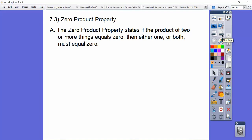The zero product property states that if the product of two or more things equals zero, then either one of them or both of them must equal zero, or all three of them or all four of them must equal zero. So if we have something times something times something equals zero, then remember anything times zero equals zero. So either this something equals zero and or this one equals zero and or this one equals zero.